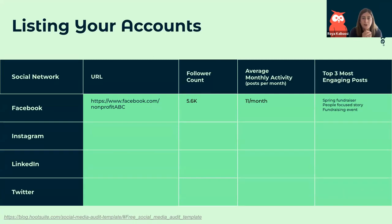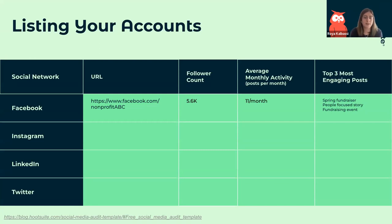Then you want your average monthly activity — typically the number of posts you've shared on each profile, averaged per month. You can immediately compare your monthly activity against your number of followers: are you more active on profiles that have more followers, or is more activity leading to more followers? Even this basic information gives you ideas about how you're performing across your social profiles.